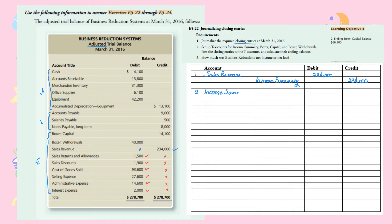On the debit side I'll debit Income Summary, and credit all of the following accounts: Sales Returns and Allowances, Sales Discount, and Cost of Goods Sold, Selling Expenses.